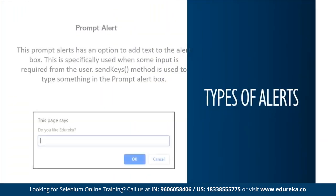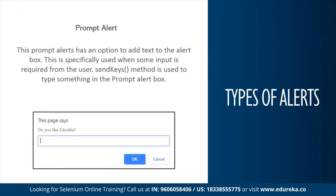Now let's see what is a prompt alert. A prompt alert asks for some input from the user, and you can enter the text using the function called send keys. This is how a prompt alert looks like — it asks for your input and it provides two options: accept (OK) or cancel.